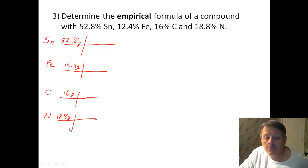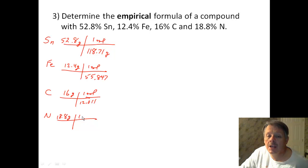So we have to go through each one. So we're going to look at Sn first. And Sn is 118.71. So let's look them all up on the periodic table. That's grams in 1 mole. And 1 mole of Fe weighs 55.847. And then we have 1 mole of carbon, that's 12.011. And 1 mole of nitrogen, that's 14.007.